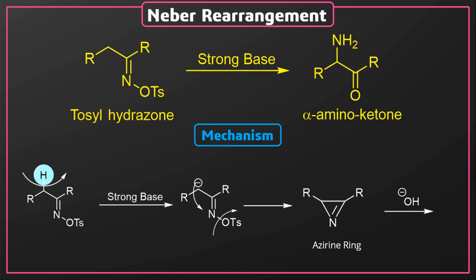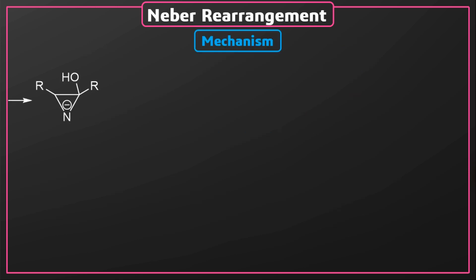A hydroxyl ion, that is the base, attacks the unsaturated carbon and the double bond moves toward the nitrogen atom, thus an anion is formed. Later, this anion is then neutralized by a proton.